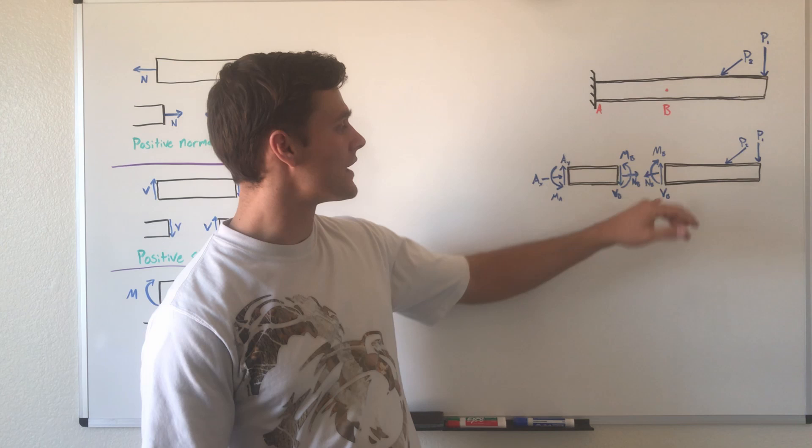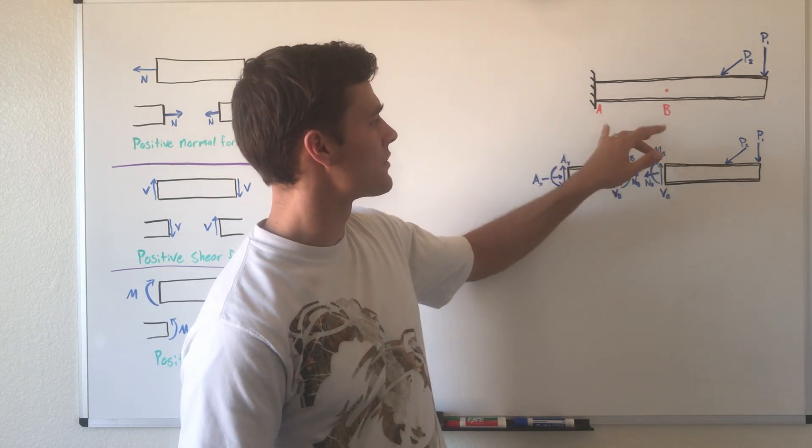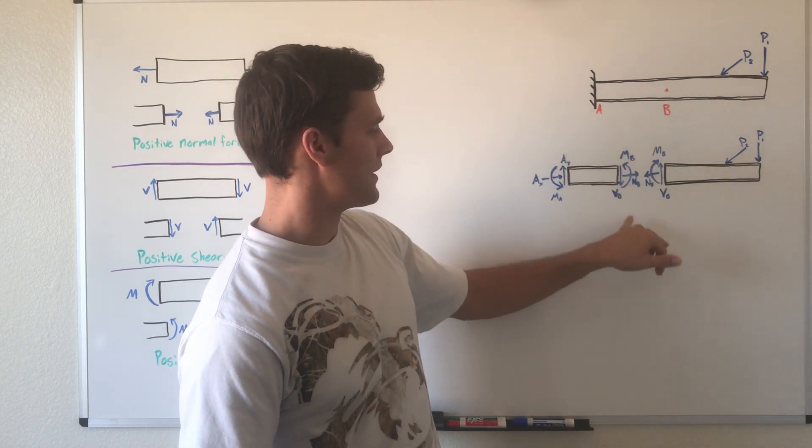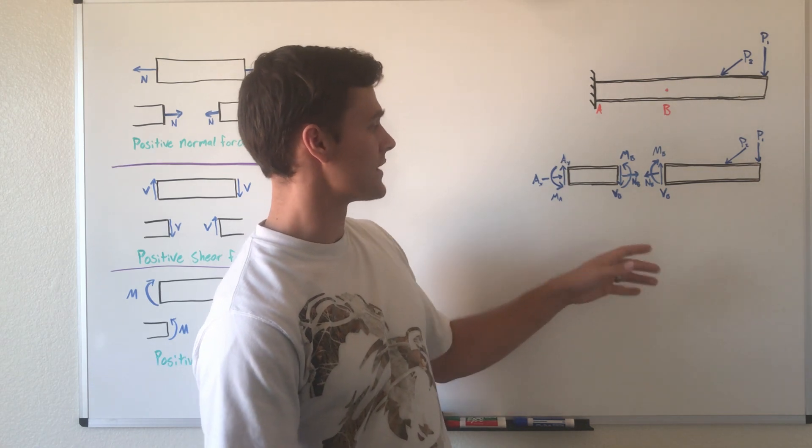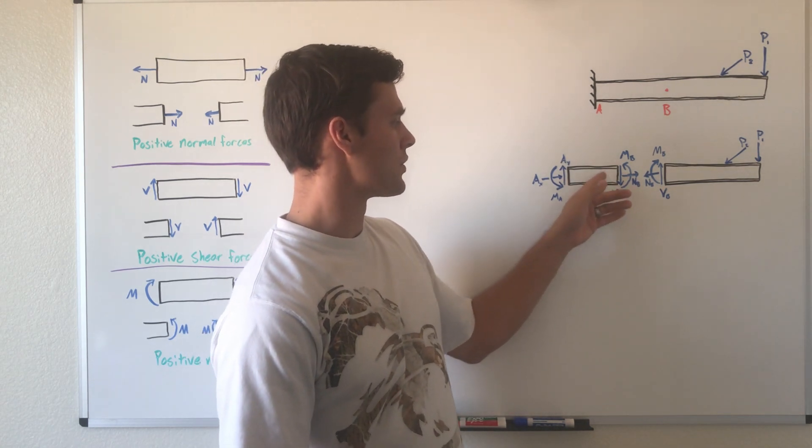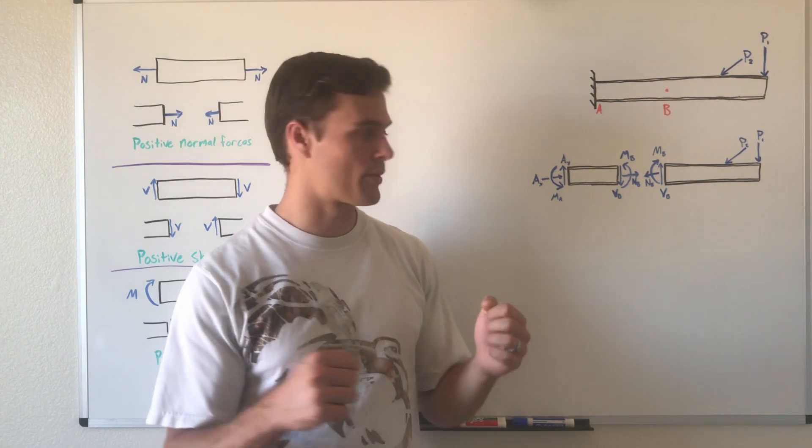That's what we've done here—we've cut this cantilever beam at point B, exposed its internal forces, and written them on both sides of the beam that we've cut and spread apart.